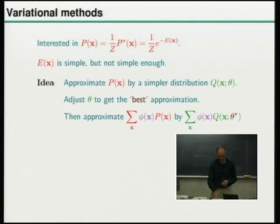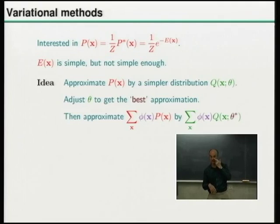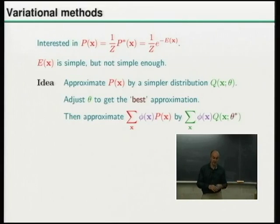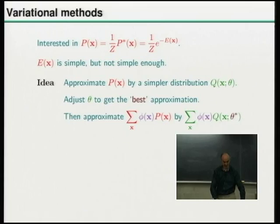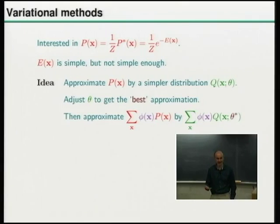A very important question is how do we define 'best'. Once we've found the best approximation — the optimized parameters theta star — we can approximate the expected value of a function phi under p by the expected value under q. That's the big picture. You could think of this as getting away from introducing random numbers: with Monte Carlo methods we said p is difficult but let's use random numbers and jump around in x space. You might have thought that's a bit inelegant — why do I need extra random numbers in addition to the data I've gathered for my inference problem?